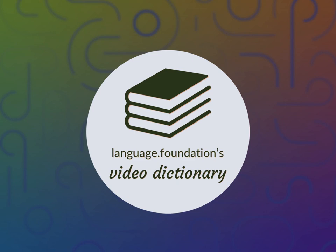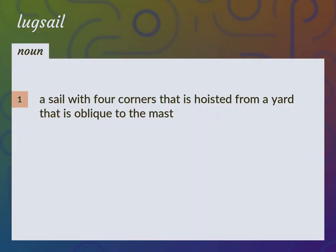Language Foundation's Video Dictionary, helping you achieve understanding. A sail with four corners that is hoisted from a yard that is oblique to the mast.